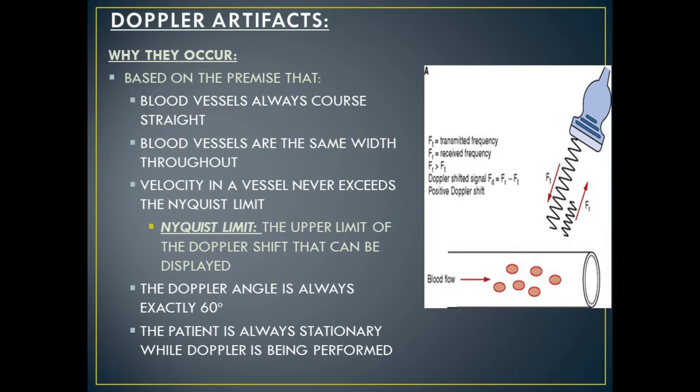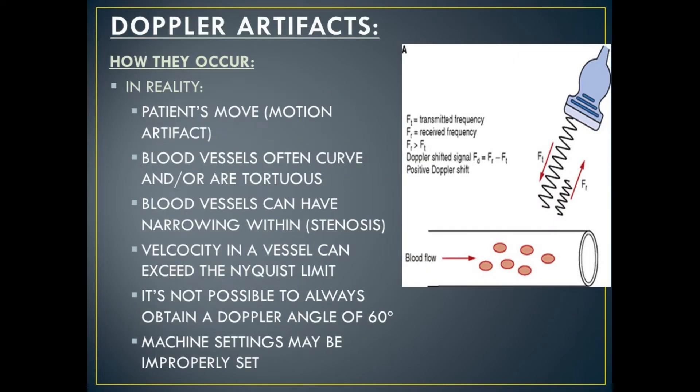Doppler artifacts occur based on the premise that blood vessels always course in a straight line, blood vessels are the same width throughout, and velocity in a vessel never exceeds the Nyquist limit. The Nyquist limit is the upper limit of the Doppler shift that can be displayed by the ultrasound machine. Doppler artifacts also occur based on the premise that the Doppler angle is always exactly 60 degrees, and the patient is always stationary while Doppler is being performed. In reality, Doppler artifacts occur because patients move (known as motion artifact), blood vessels often curve or are tortuous, blood vessels can have narrowing within them (known as stenosis), velocity in a vessel can exceed the Nyquist limit, it's not possible to always obtain a Doppler angle of 60 degrees, and machine settings may be improperly set.